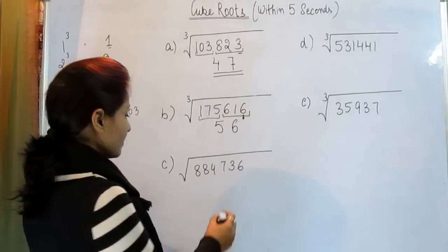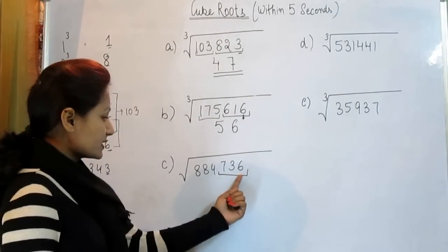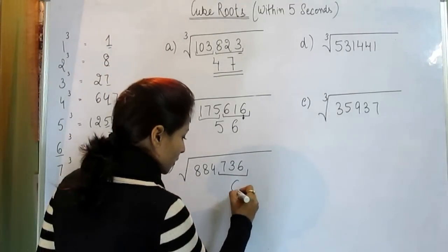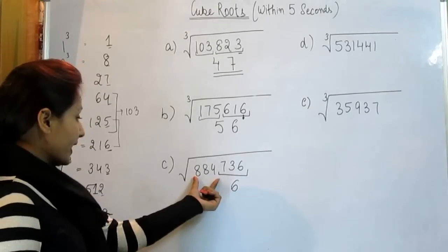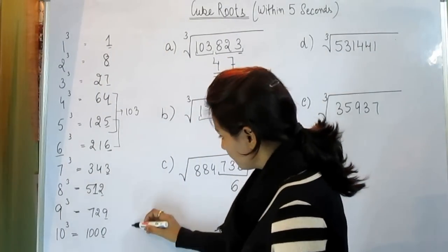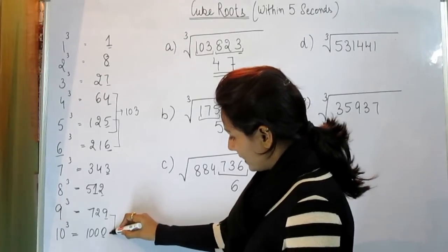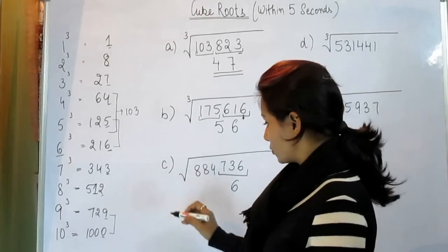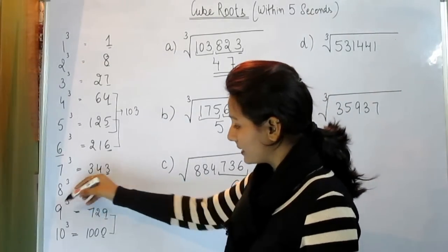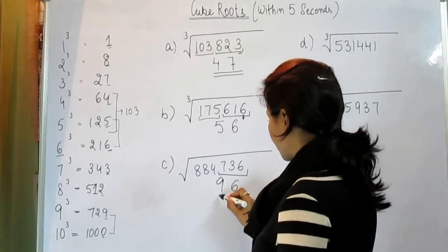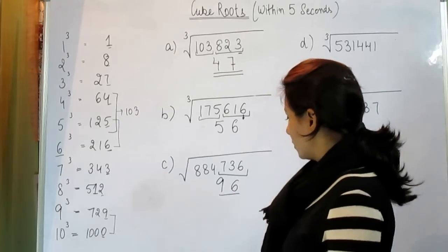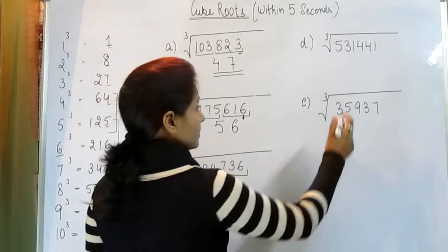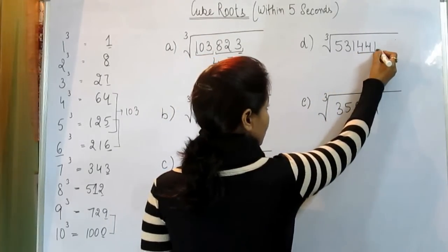Again, we have the same number. Now again we have 6 at the end. 6 comes in the cube root of 6. Now 884 comes between, you can see, 884 comes between these two numbers. So we take the smallest one that is 9. So answer is 96. When you multiply 96 three times, you will get this answer.